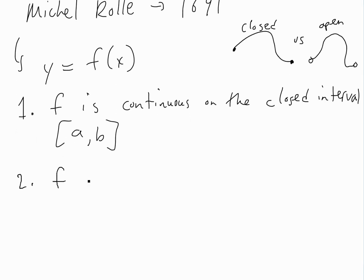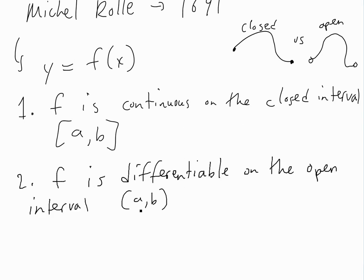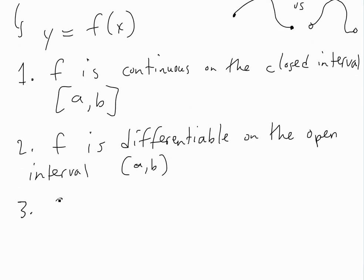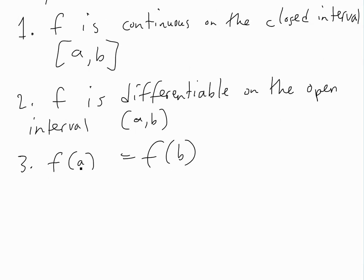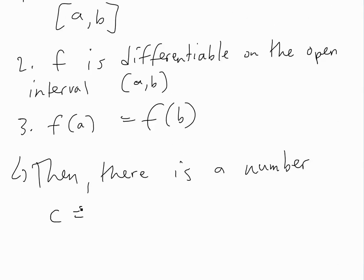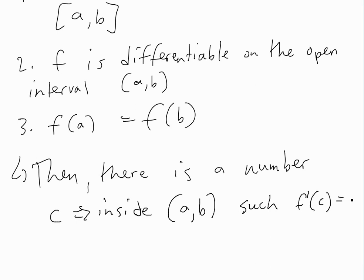The second condition is that f is differentiable on the open interval (a, b). This just means that everywhere you could take a derivative — except at the ends — doesn't really matter for this one. And the third condition is that f of a equals f of b. Then there is a number c inside the interval a and b such that f prime of c is equal to zero.